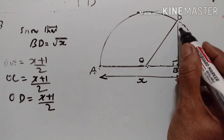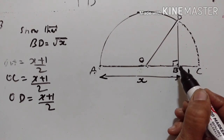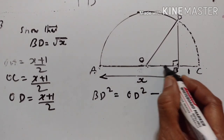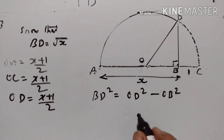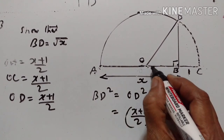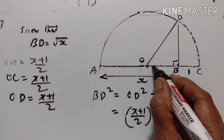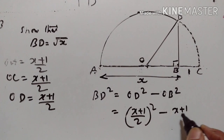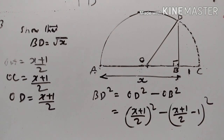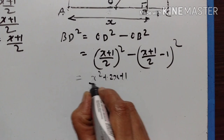So OD equals x plus 1 upon 2. BD squared equals OD squared minus OB squared, by the Pythagorean theorem. OD squared equals x plus 1 upon 2, the whole square. OB equals x plus 1 upon 2 minus 1.